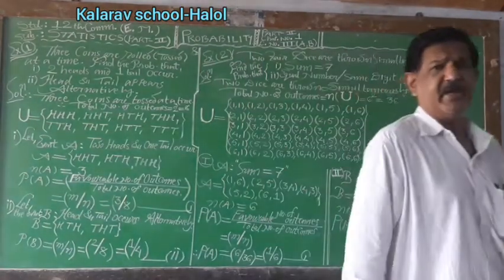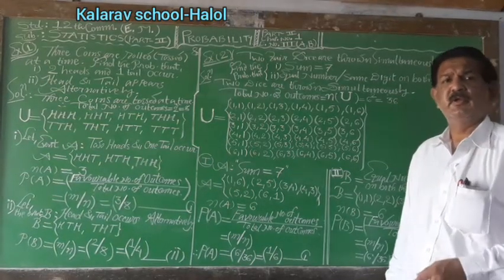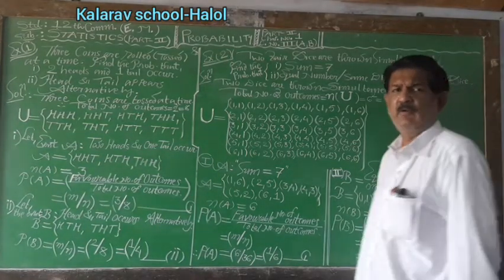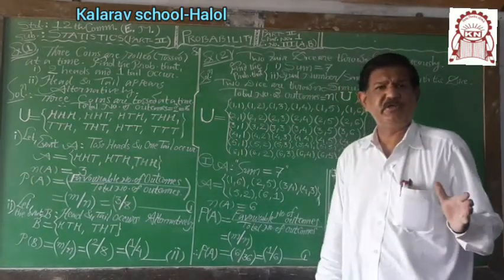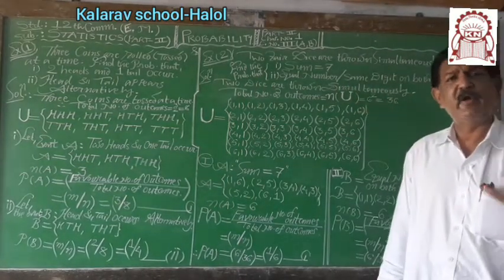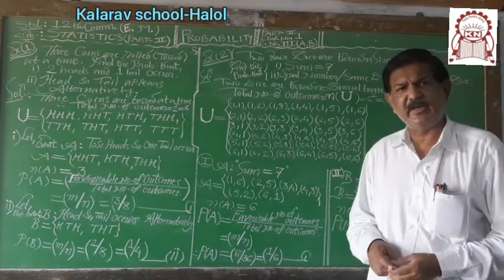We are taking basic and primary examples based on probability. Last time we covered the theory portion, important definitions and rules and formulas based on probability. Today we take the practical examples, numerical examples.